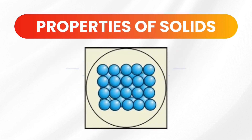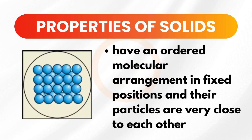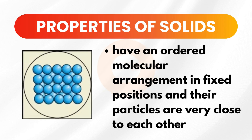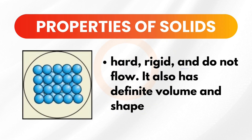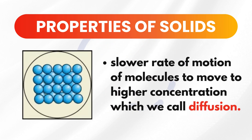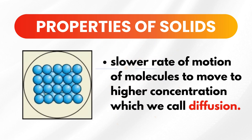Talking about the different properties: solids have an ordered molecular arrangement in fixed positions and their particles are very close to each other. In appearance and ability to flow, solids are hard, rigid, and do not flow. They also have a definite volume and shape. Solids also have a slower rate of motion of molecules, meaning a slower rate of diffusion.